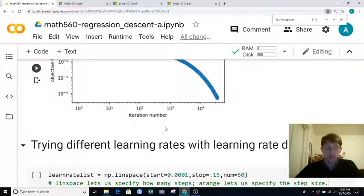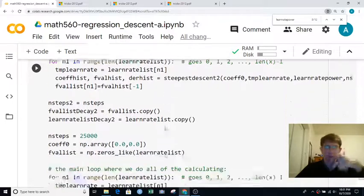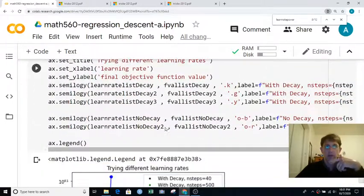Then we can try different learning rates now that we have learning rate decay and see how does that increase the range of reasonable learning rates. So here's a bunch of code that just does a bunch of loops and then plots it.